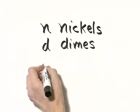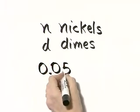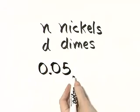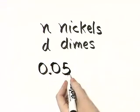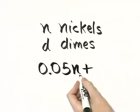So a nickel is 5 cents, or I'll write it as 5 hundredths of a dollar. That would be 0.05 times n. That's the value in nickels.